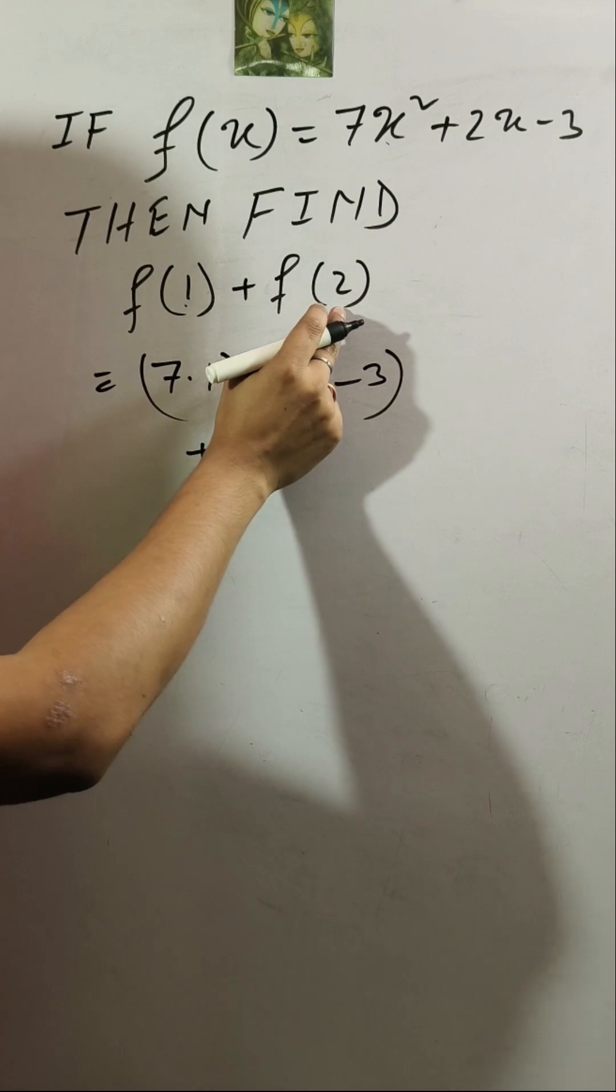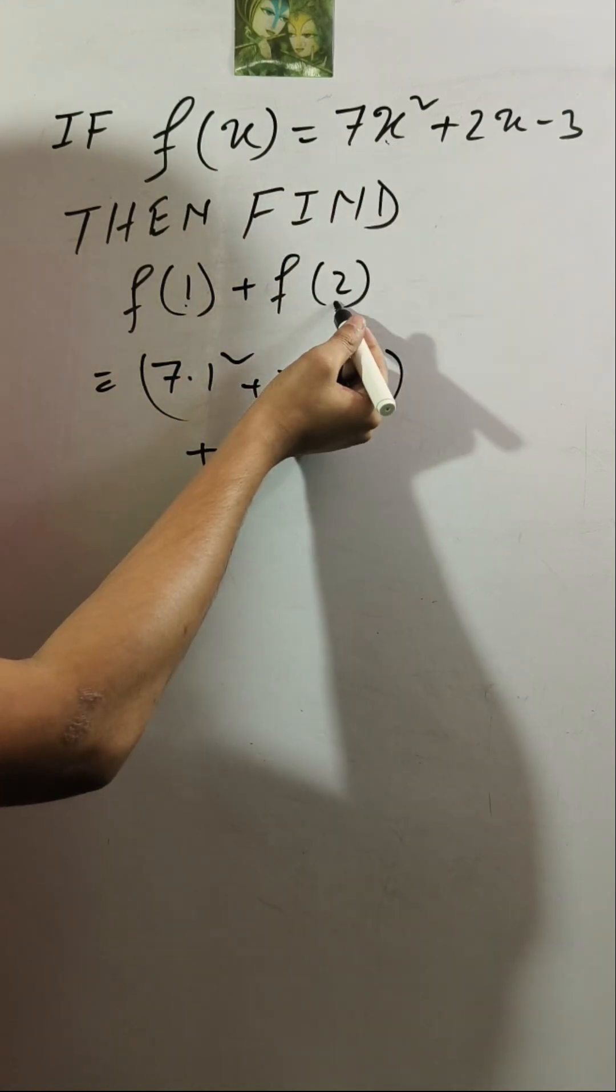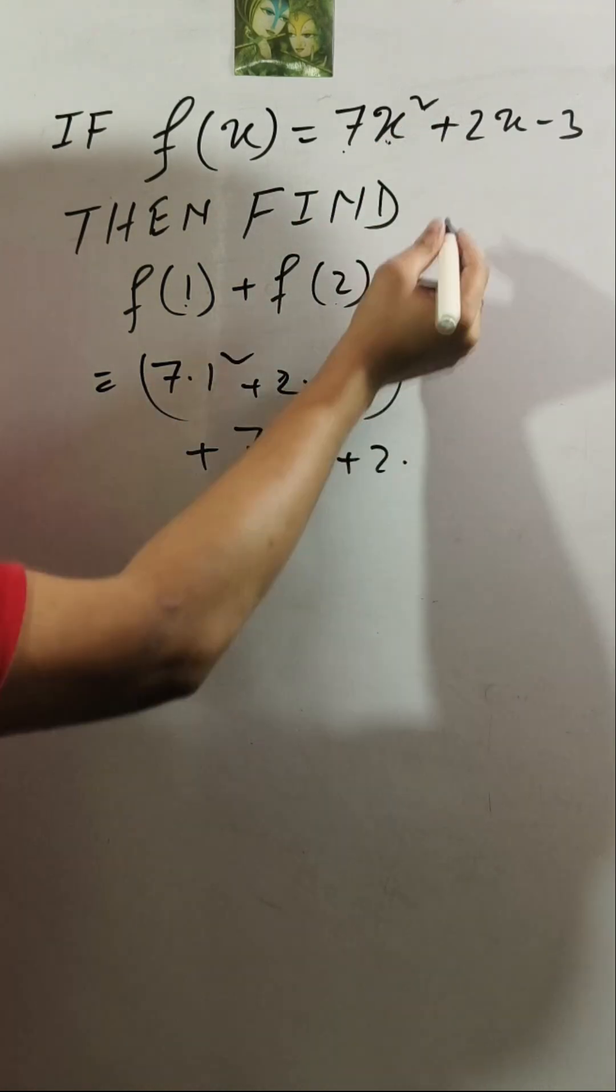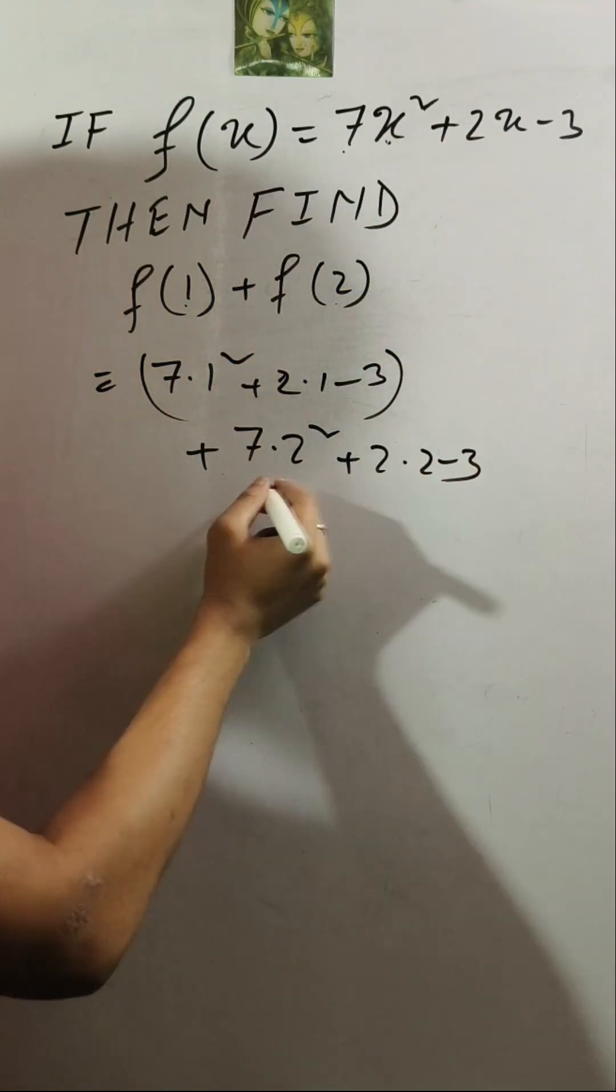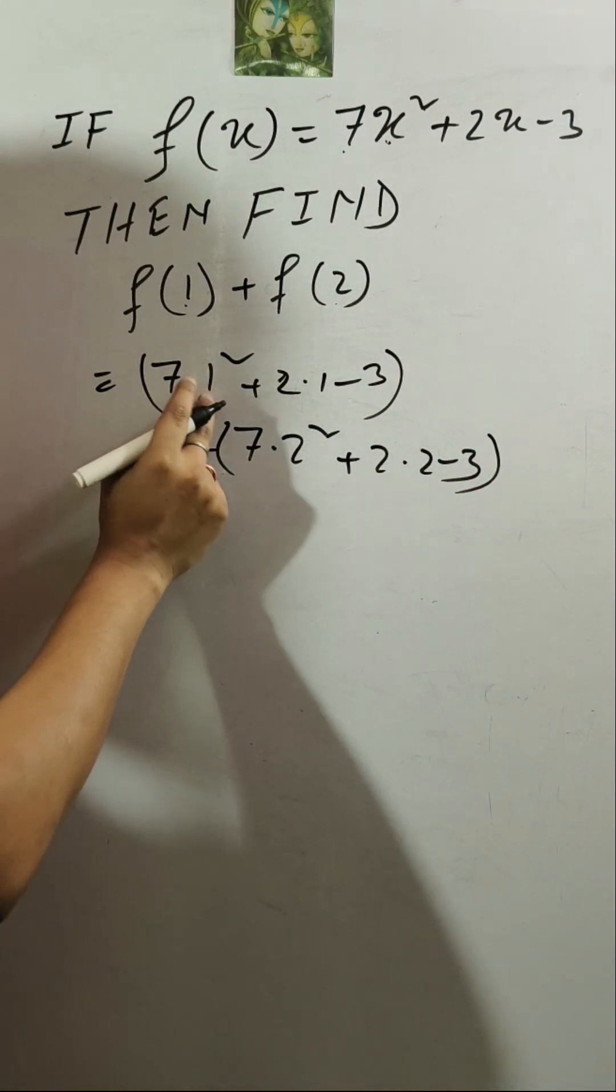Similarly for F of 2, we need to replace X by 2. That is 7 into 2 square plus 2 into 2 minus 3. It is the expression for F of 2. Now 7 into 1 square is 7, plus 2 into 1 is 2, minus 3.